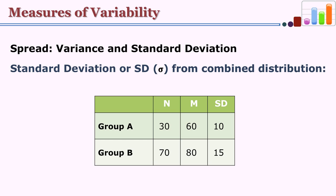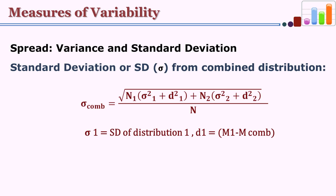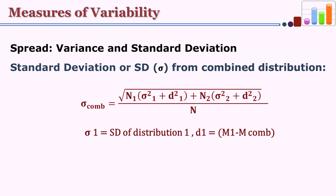The formula for standard deviation of the combined distribution is: SD_combined = square root of [n₁(σ₁² + d₁²) + n₂(σ₂² + d₂²)] divided by n. In this formula, σ₁ is the SD of distribution 1, σ₂ is the SD of distribution 2, d₁ is the deviation between mean 1 and the combined mean (m₁ minus m_combined), and d₂ is m₂ minus m_combined. We will substitute the values in the given formula.